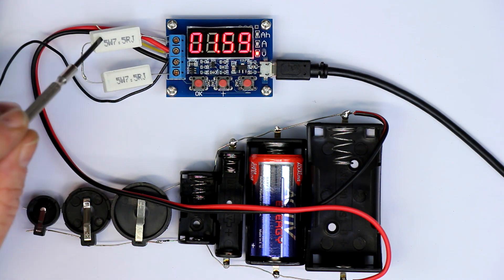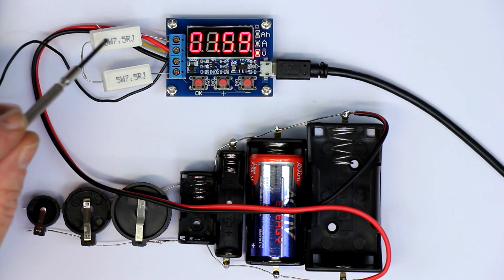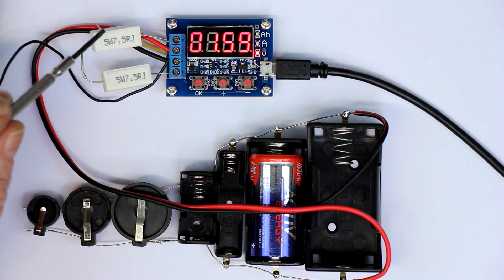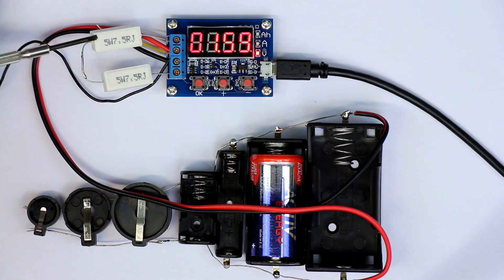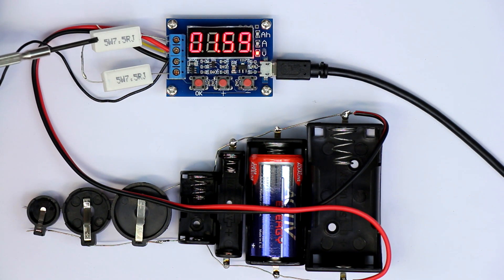These come quite handy depending if you use one of them, two of them in parallel, or as here, two of them in series. This gives you a lot of useful discharge resistor values for a lot of battery values.